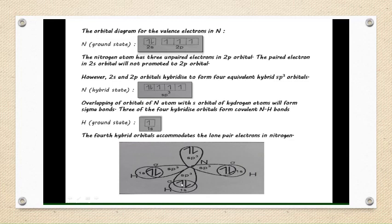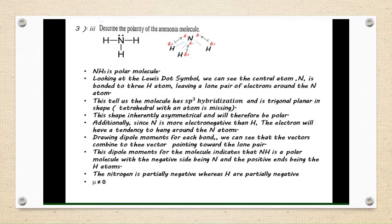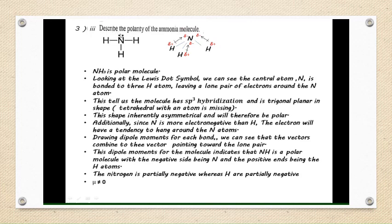For question 8a part 3, describe the polarity of the ammonia molecule. We need to determine whether it is polar or non-polar. NH3 is a polar molecule. Looking at the Lewis dot symbol, we can see the central atom N is bonded to three atoms of H, leaving a lone pair of electrons around the N atom.